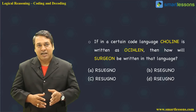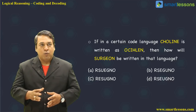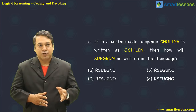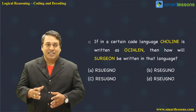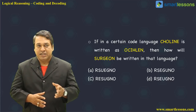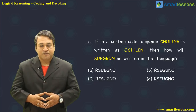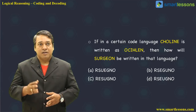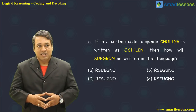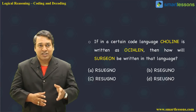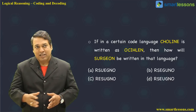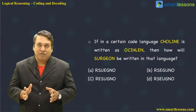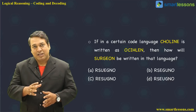Let us look at the next question. If in a certain code language 'choline' (C, H, O, L, I, E, N) is written as O, C, I, H, L, E, N, then how will 'surgeon' (S, U, R, G, E, O, N) be written in that language? Options: A: RSUEGNO, B: RSEGUNO, C: RESUGNO, D: RSEUGIO. We need to recognize the same coding pattern used for 'choline' and apply it to 'surgeon' to get the correct answer.